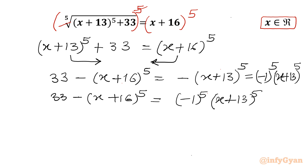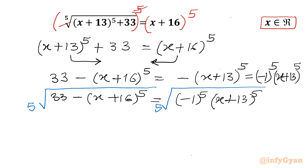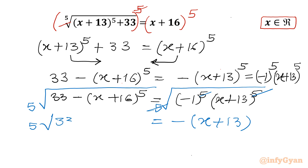Now I will take the 5th root of both sides. On the RHS we can cancel the 5th root with the power 5, leaving −(x + 13). On the LHS it becomes the 5th root of 33 − (x + 16)^5.